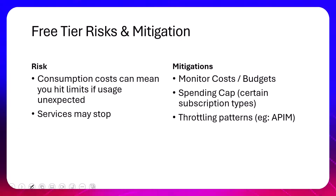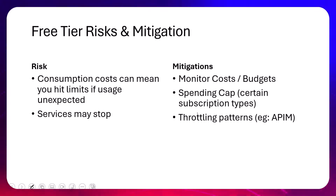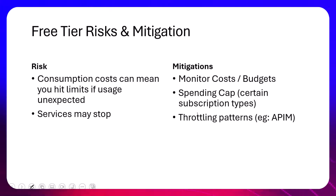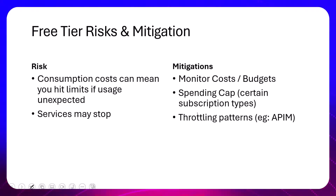With the free tiers, there are a few risks to think about. A lot of that was running on a consumption tier — things like Functions, Logic Apps, and API Management where we get a million requests a month. If you start going beyond that limit, you'll start paying for it. You have to think about how you'll manage that. If you're on a free tier where you haven't allowed it to go past the free tier level, your services will stop. So you need to think: do you want them to stop, or do you want them to start charging your card if they go beyond that? You can mitigate this by monitoring your costs, setting spending caps on certain subscriptions, and using throttling patterns if you want to limit requests to your API and how those requests hit your backends.